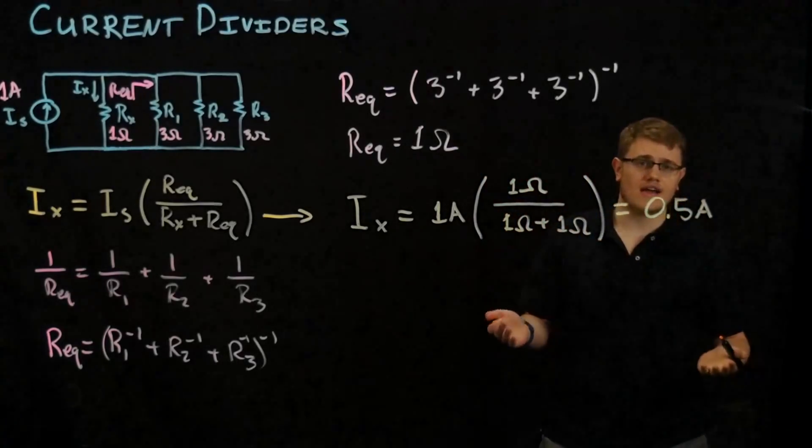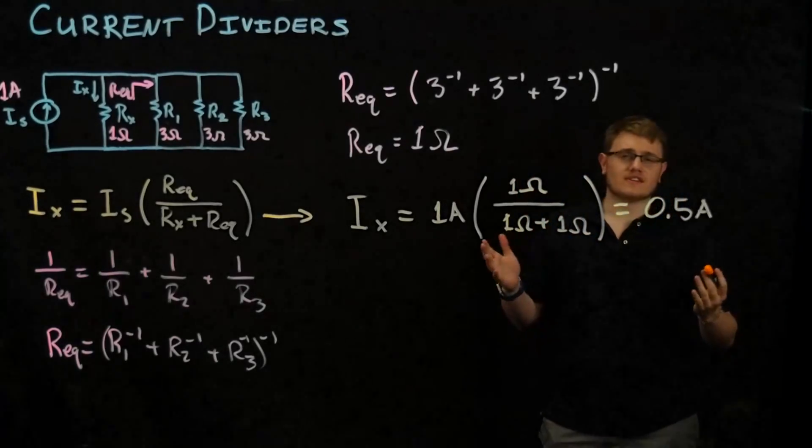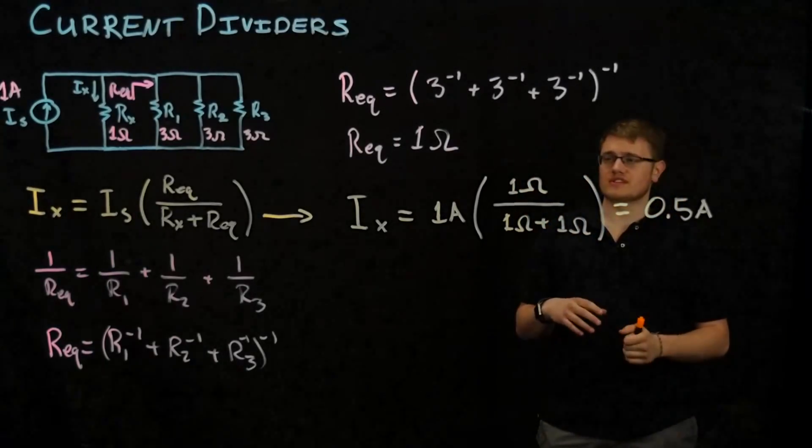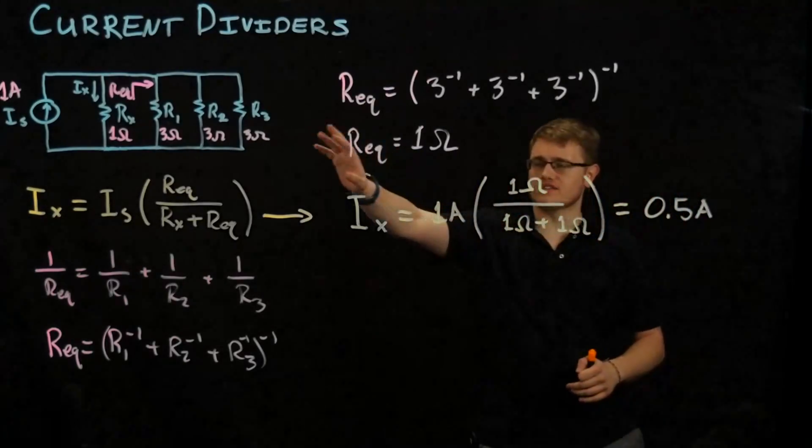And that's how you use a current divider. Now, current dividers are very similar to voltage dividers. You're just using them whenever you see a circuit and some configuration shows up like this.